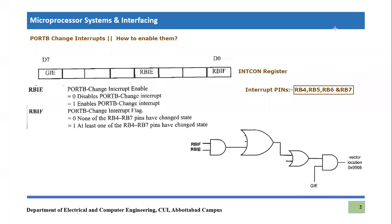What are Port B change interrupts and how to enable them? First of all, we need to know what are Port B change interrupts. These pins are basically associated with these four pins: RB4, RB5, RB6 and RB7.